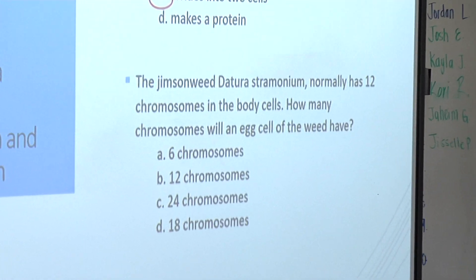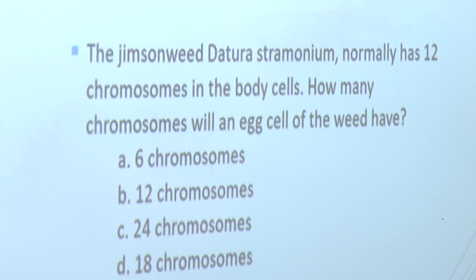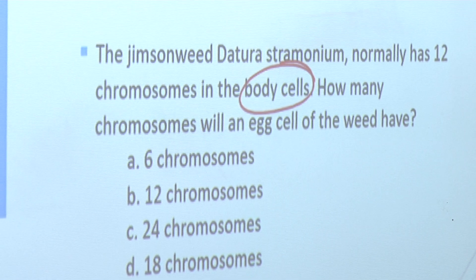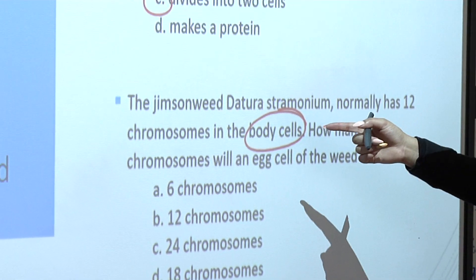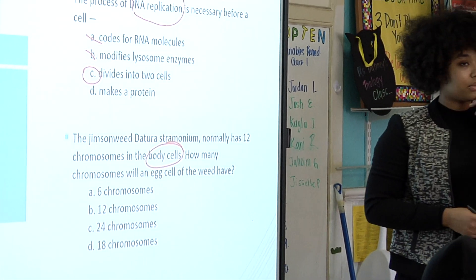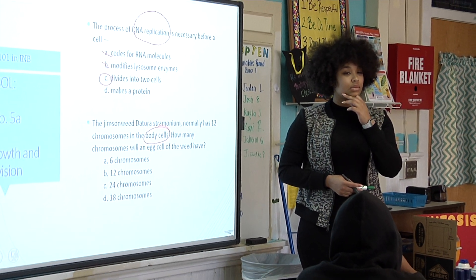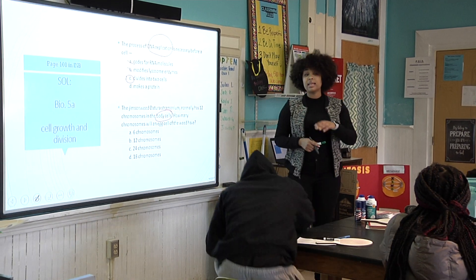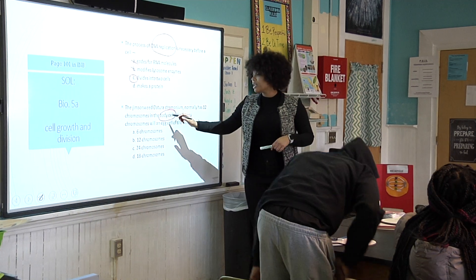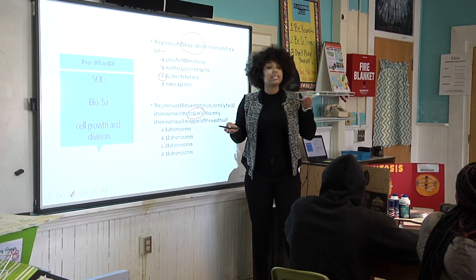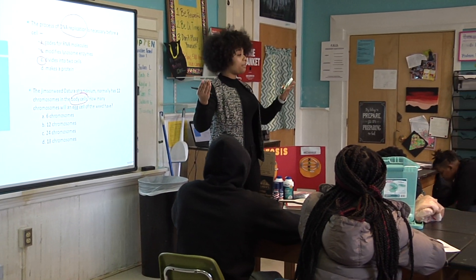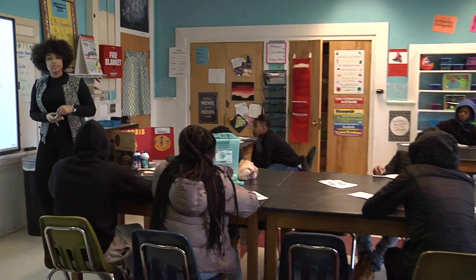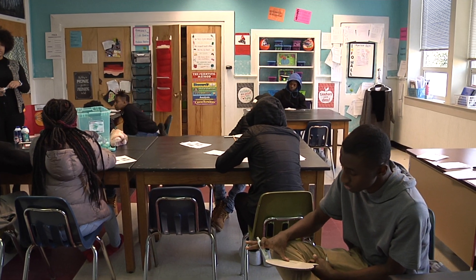Next question: the jimson weed Datura stramonium normally has 12 chromosomes in its body cells. How many chromosomes will an egg cell of the weed have? What did I circle? Body cells — because body cells don't have anything to do with sexual reproduction. So we know that our number is going to be the same, because mitosis is a diploid-to-diploid process. Which means the correct answer is B.